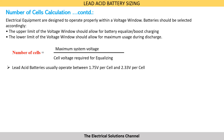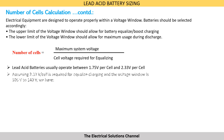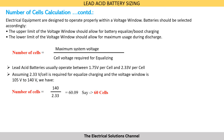Lead acid batteries usually operate between 1.75 volts per cell and 2.33 volts per cell. Assuming 2.33 volts per cell is required for equalizing, and the voltage window is 105 volts to 140 volts for a 125-volt battery, we have number of cells equal to 140 divided by 2.33, which equals 60.09. So let's say we select 60 cells.